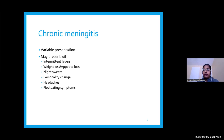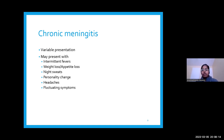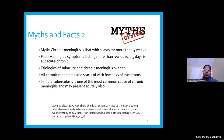In this era of easy availability of immunosuppression, patients with CKD, rheumatologic diseases, or on chemotherapy are commonly seen in intensive care. Chronic meningitis may present with intermittent fevers, weight loss, appetite loss, night sweats, personality change, headaches, and fluctuating symptoms. Any meningitis lasting more than five days is considered subacute or chronic. Tuberculosis in India is one of the most common causes of chronic meningitis and may present acutely.